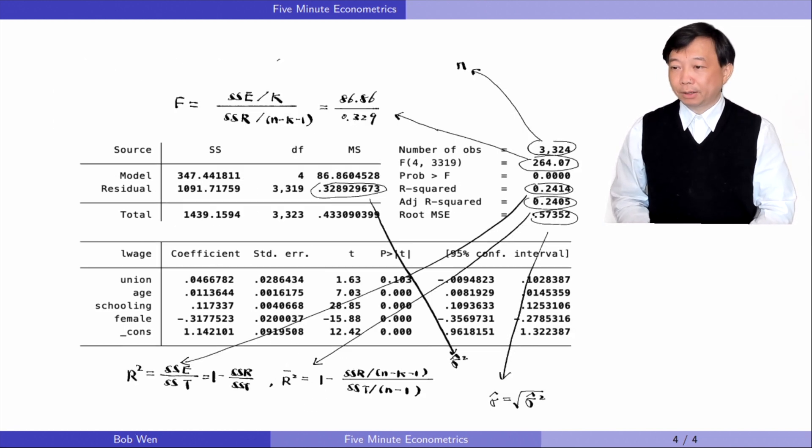Finally, we look at the upper right table. The first is the number of observations, n. The second is the F statistic for the overall significance of the regression. The null hypothesis is that all explanatory variables are zero. It can be proved that it is the ratio of the model mean squares to the residual mean squares. We then see the p-value of the F statistic. In our case, the F statistic is large and its p-value is zero to four decimal places. It implies that the four explanatory variables in the model are jointly statistically significant at any reasonable level.